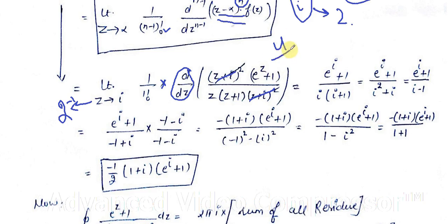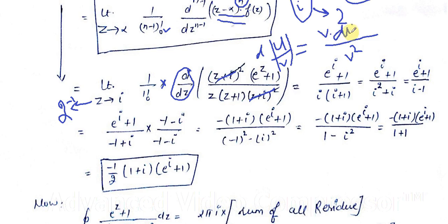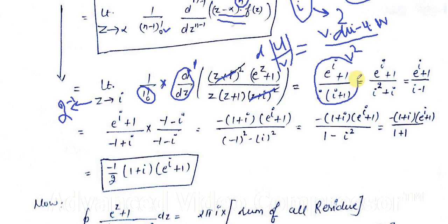Applying the quotient rule: derivative of u/v = [v·(du/dz) − u·(dv/dz)] / v². After computing the derivative and substituting z = i, we get e^(i+1)·(i)·(i+1). Since i should not remain in the denominator, we rationalize the expression and after simplification we obtain the final value of the residue at z = i.